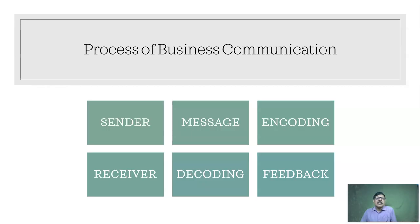Now, in the process of business communication, according to Mr. Kreitner, business communication is a process and is a chain made up of identifiable links. This chain includes the sender, the message, encoding, receiver, decoding, and feedback. A detailed review of this is given in the link below, so please do have a look at that too.